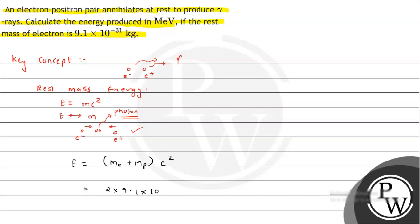Into 9.1 times 10 to the minus 31. This will be C squared, that is 3 times 10 to the 8 squared, 9 times 10 to the 16. So on solving this we can say the value comes out to be 18 times 9.1 times 10 to the minus 15.